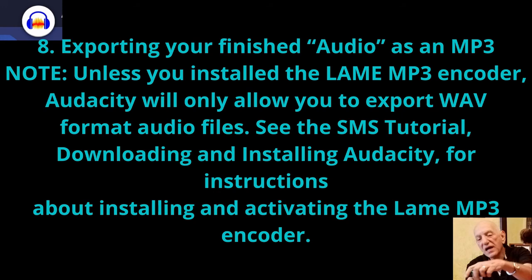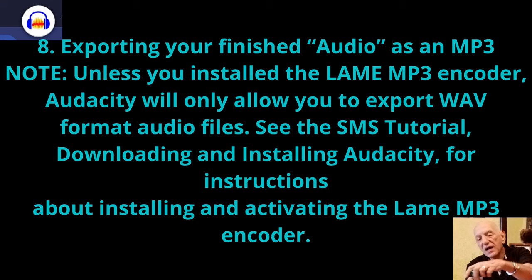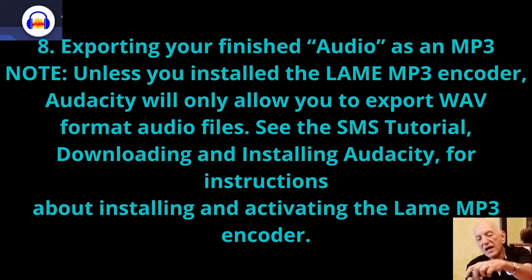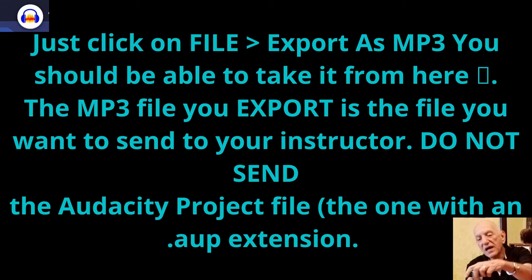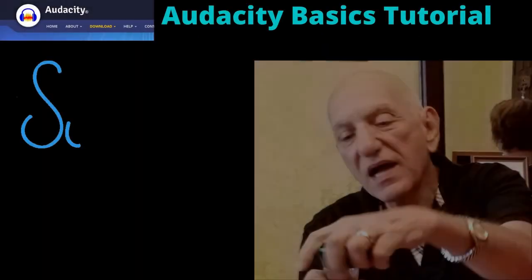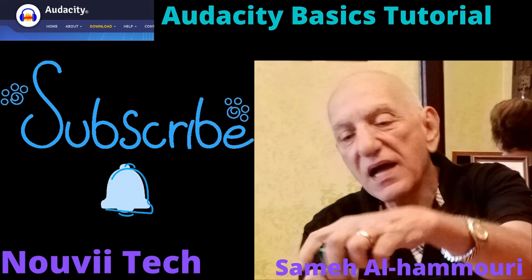Tip 8: Exporting your finished audio as an MP3. Note: Unless you install the LAME MP3 encoder, Audacity will only export WAV format. See the SMS tutorial 'Downloading and Installing Audacity' for instructions on installing and activating the LAME MP3 encoder. Click File > Export as MP3. The MP3 file you export is the file to send to your instructor — do not send the Audacity project file with the .AUP extension.